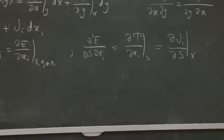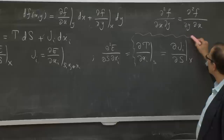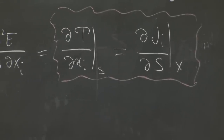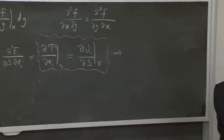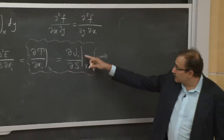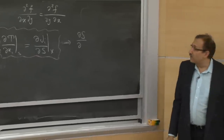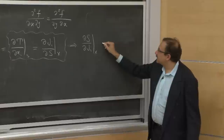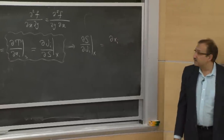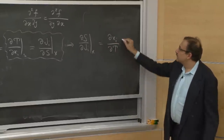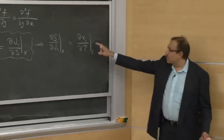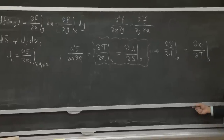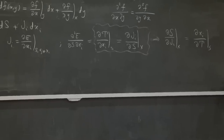This is an example of a Maxwell relation. We can always invert these derivatives. If I wondered how the entropy changes as a function of a force such as pressure at constant displacement, it would be related to how the corresponding displacement to the force changes as a function of temperature — giving a relationship between observables such as how the length of a wire changes with temperature and how entropy changes with pressure.